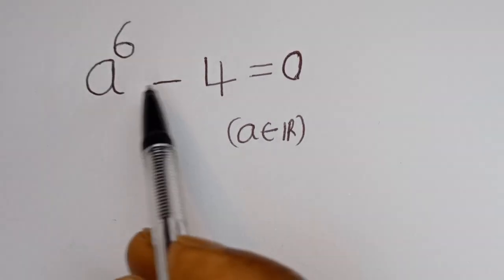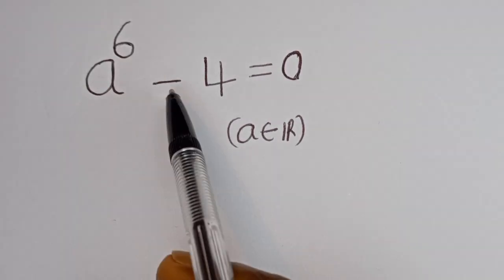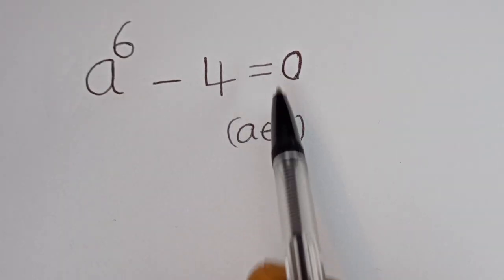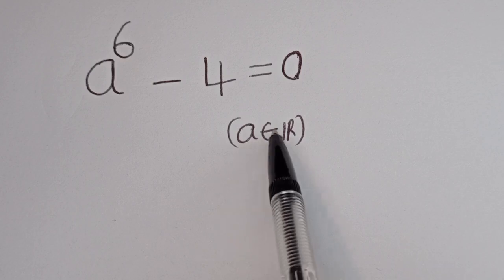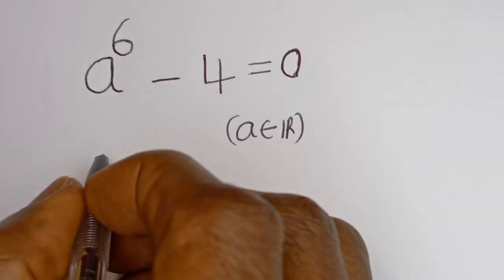Hello, how to solve for a in this equation: a to the power of six minus four is equal to zero, where a is a member of the real number solution.